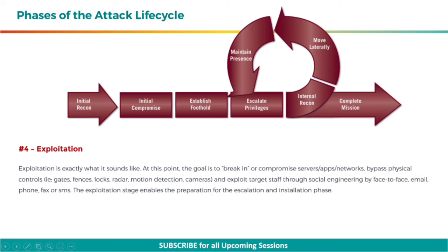The next step is exploitation. Exploitation is exactly what it sounds like. At this point, the goal is to break in or compromise servers, apps, or networks; bypass physical controls — gates, fences, locks, radar, motion detection, cameras — and exploit target staff through social engineering by face-to-face, email, phone, fax, or SMS. The exploitation stage enables the preparation for the escalation and installation phase.